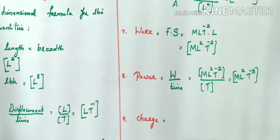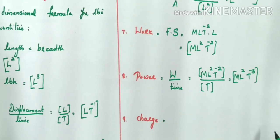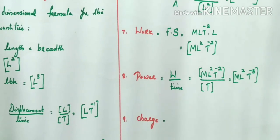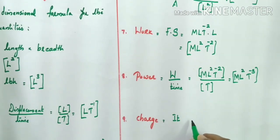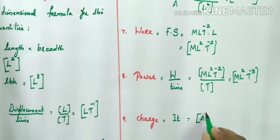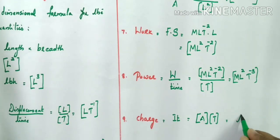Next, charge. Electric current is the rate of flow of charge, and current is a fundamental physical quantity with dimension A. We know that charge Q equals current into time, so Q = It. The dimension of current is A and time is T, so the dimensional formula for charge is [AT].